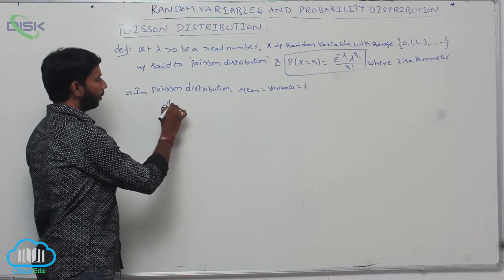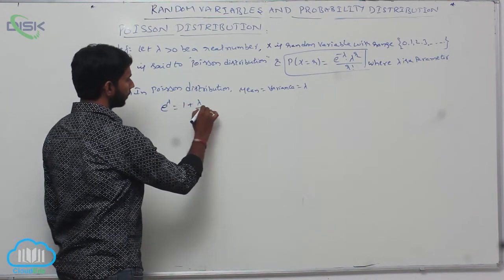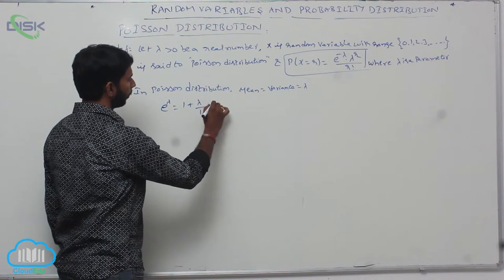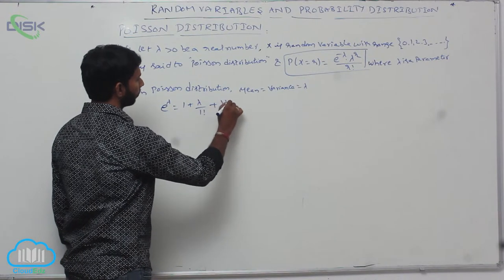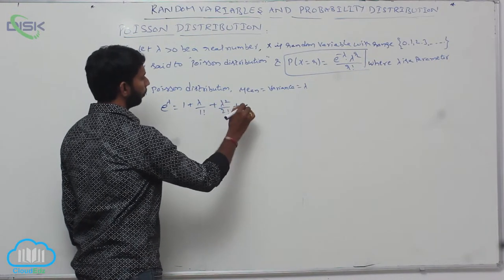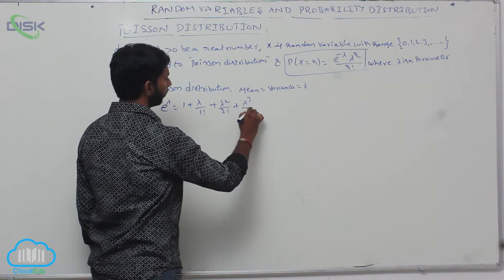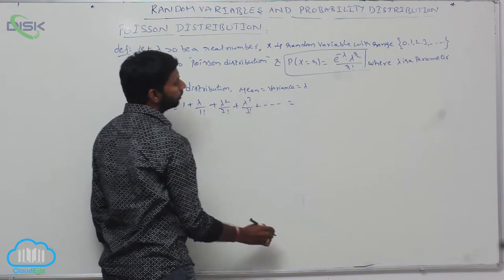And e to the power lambda is equal to 1 plus lambda by 1 factorial plus lambda squared by 2 factorial plus lambda cubed by 3 factorial plus and so on.